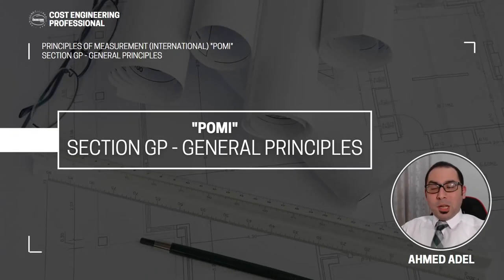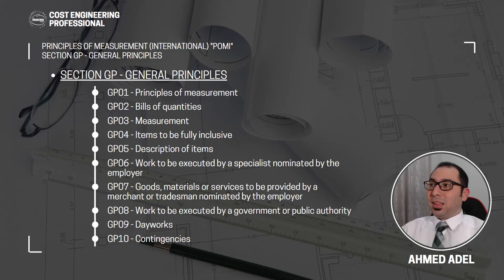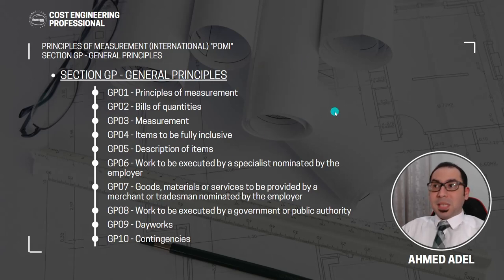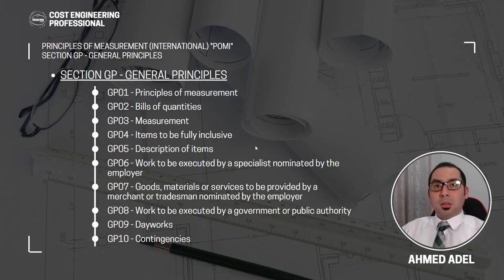Welcome back. Previously we talked about the general principles of POMI and understood that these general principles consist of 10 subsections. In our previous video we discussed up to section 5, which is description of items. I'll leave the link to that video down in the description and in the top right corner.